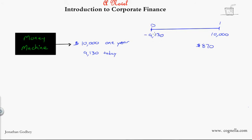So you've reduced your consumption today by this amount. Imagine going to a store and filling up a grocery cart with everything that you would want to buy with $9,130. You can't do that and you wait for a year to get the $10,000.